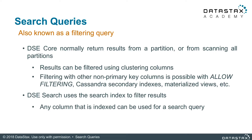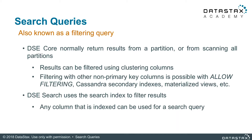We can also filter with non-primary key columns if we enable: one, allow filtering; two, adding Cassandra's secondary indexes; or three, adding materialized views. Many of these ways are not recommended due to some very real performance concerns. DSC Search uses search indexes to filter results in a way that has been optimized to not heavily impact performance.